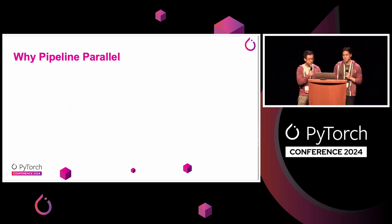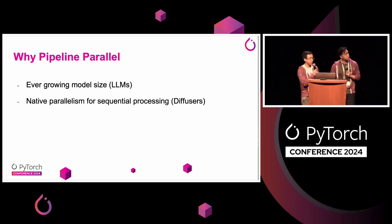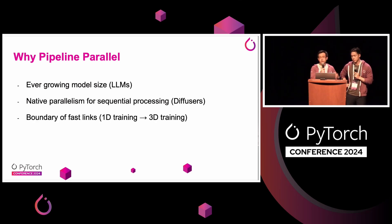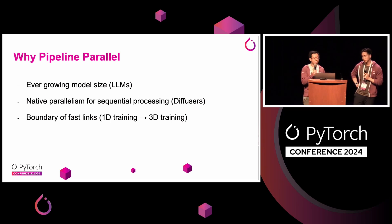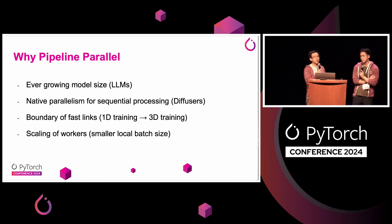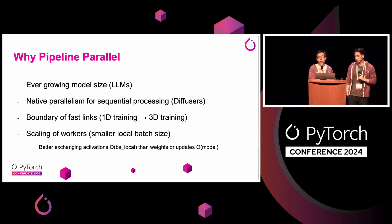In addition to cutting your model into smaller pieces so that they can fit on devices, there are also a couple of other scenarios where pipelining can help. For example, if your model is sequential processing by its nature but you want some concurrency, you can use pipelining. Second, fast links like NVLinks do not extend everywhere, so if you hit the boundary of NVLink fast links, you can turn to pipelining to hide your communication latency. Last but not least, if you want to scale the number of workers in large-scale training, local computation becomes smaller and smaller — and in that case, switching to transmitting activations means its size will come down as your local batch size comes down as well.